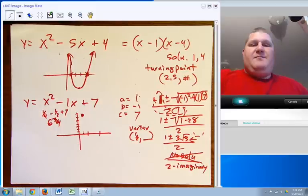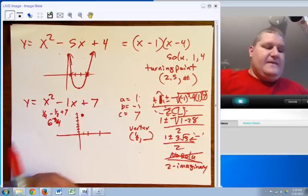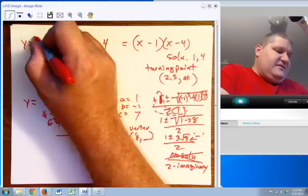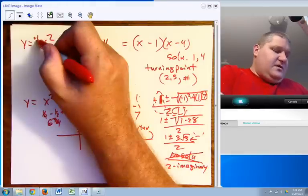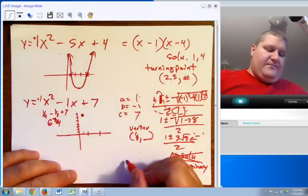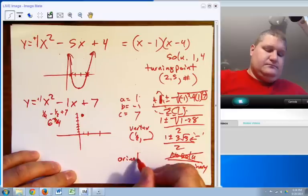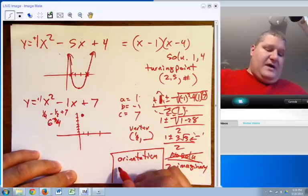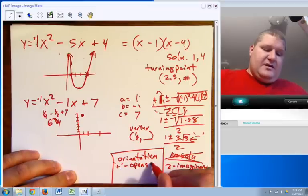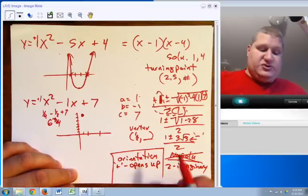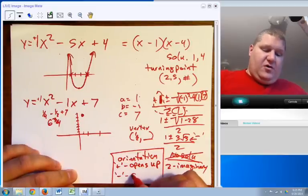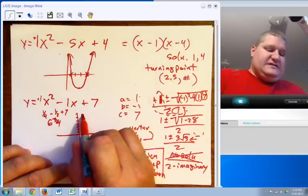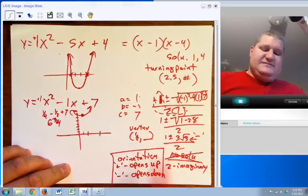And the other key piece is I mentioned that the leading term test says the orientation. If this first leading term, this leading coefficient, is positive, in this case positive 1, unwritten, or in this case positive 1, that means it's going to open up. So for orientation, positive means opens up, or at least opens in standard direction. Negative, of course, means opens down, or in non-standard direction. So in our case, we have a vertex here, we know it opens up, and that makes sense because we have no solutions.